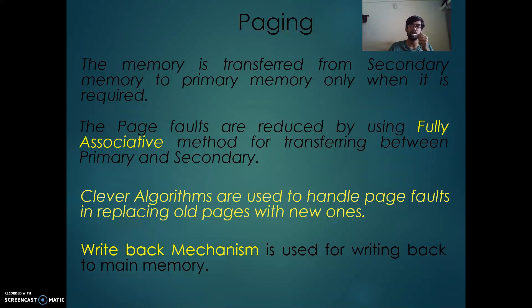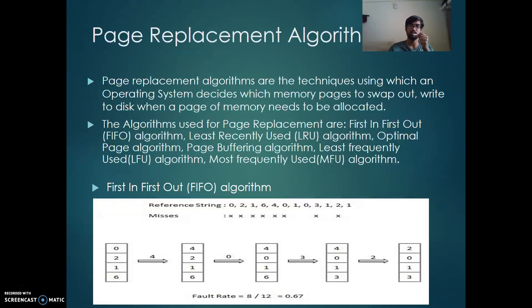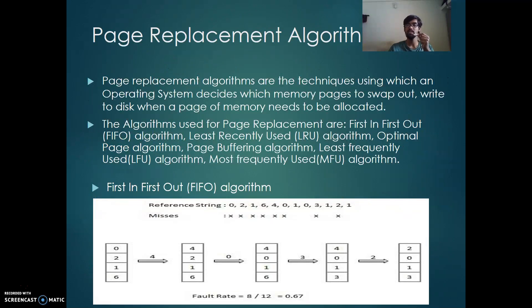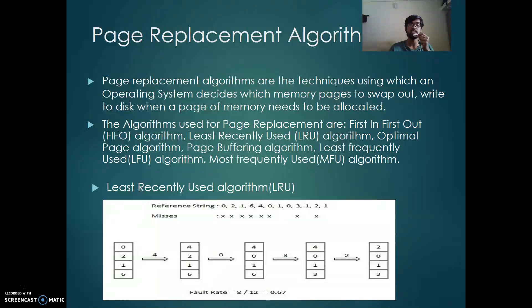There are two types of write mechanisms: write through and write back. Write back is used here, meaning data is written to secondary memory only when required. Many page replacement algorithms are used. First In First Out (FIFO) means whichever page comes first will be replaced first. Another is Least Recently Used (LRU), which replaces whichever page was least recently used.